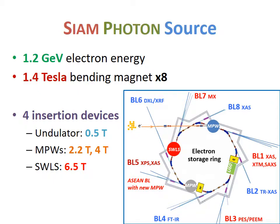Our machine has 1.2 giga-electron volts. 1.4 tesla magnets are located at 8 beamlines to circulate the electrons in the ring. When we look carefully at our storage ring, 4 long straight sections are available for insertion devices to obtain high energy and high flux X-rays.